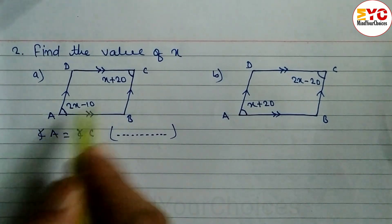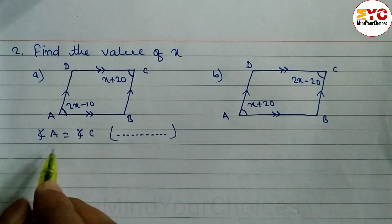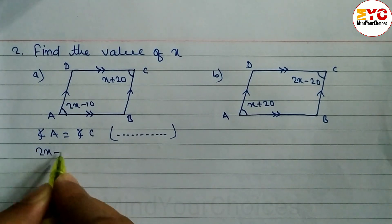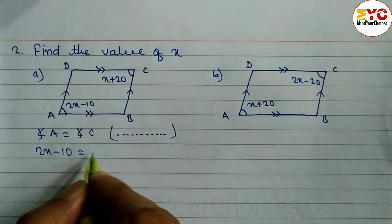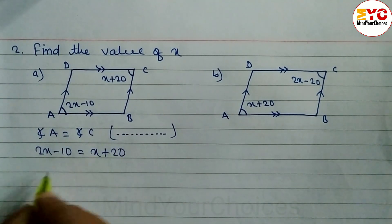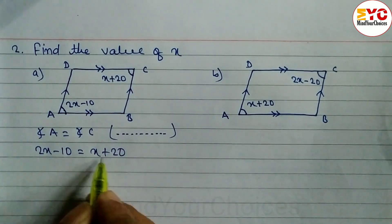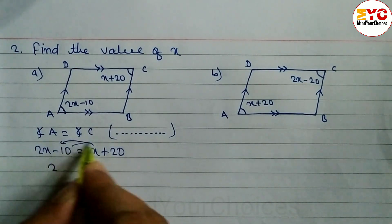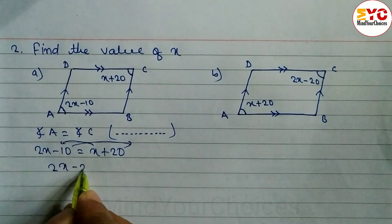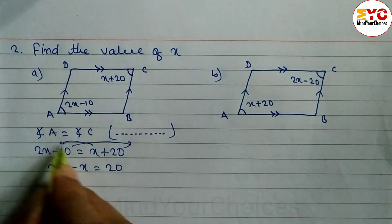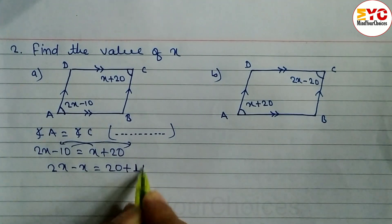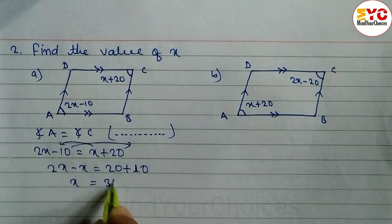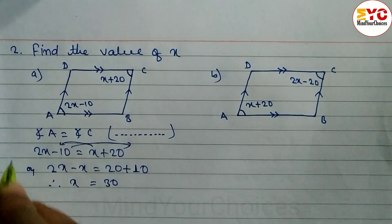Angles are given and we have to find out the value of x. Angle A is 2x minus 10, and angle C is x plus 20. We have to arrange this: unlike terms come together. So 2x minus x equals 20 plus 10, and when you subtract we get x is equal to 30.